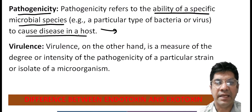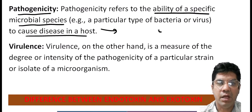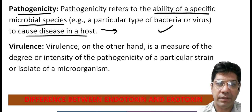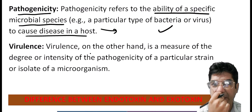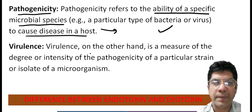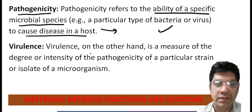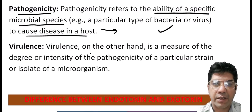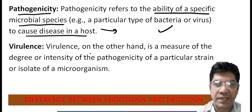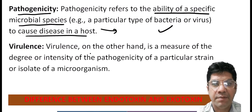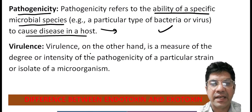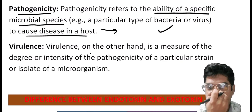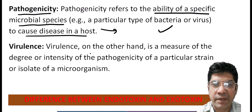Another term is virulence. Virulence is the measure of the degree or intensity of pathogenicity of a particular strain — it relates to how severe the disease caused by a specific strain of a microbe can be. For example, some strains of the influenza virus cause mild illness while others may lead to severe and even life-threatening infection.